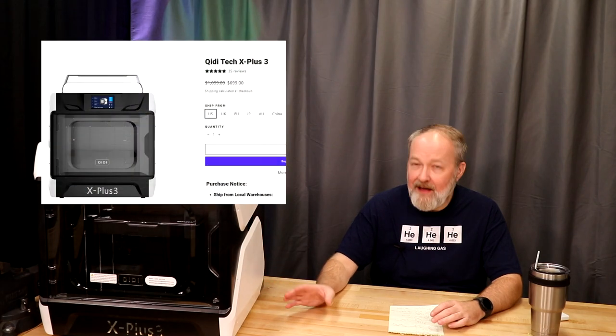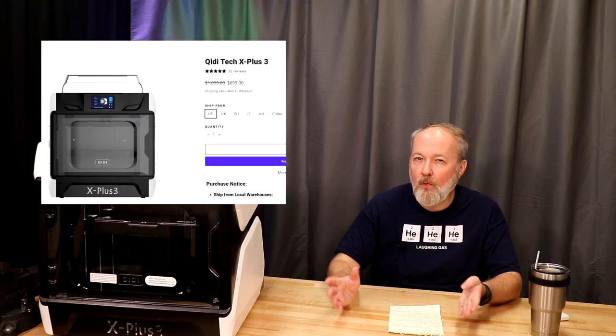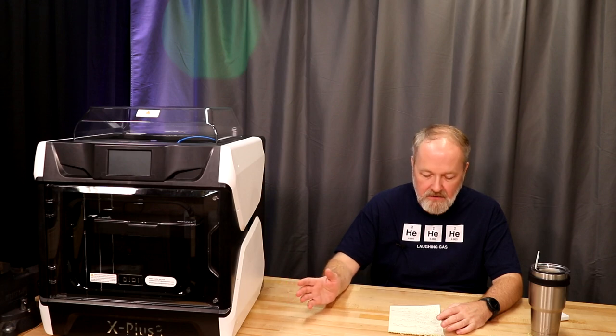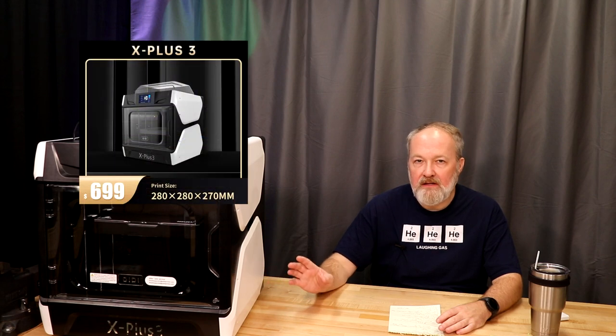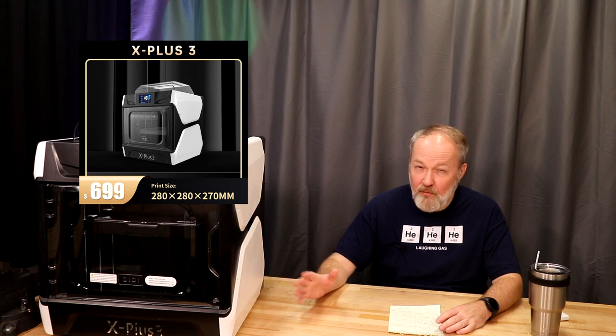So before we get into the differences between the old version and the new version, let's talk about some of the specifications for the new version. So this unit right now is priced at $699 and that puts it well in the ballpark of the other Core XY kind of front runner machines that are out there. And there are some key differences between this machine and let's say one of the Bamboo P1S's or even the Creality series of printers. Firstly, the build volume on this is 280 by 280 by 270, which is about 11 by 11 by 10.6 inches. And that is larger than a Bamboo Labs printer.